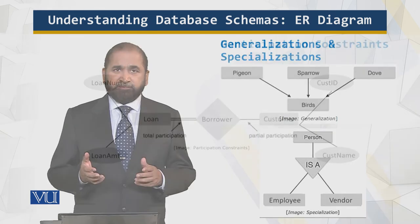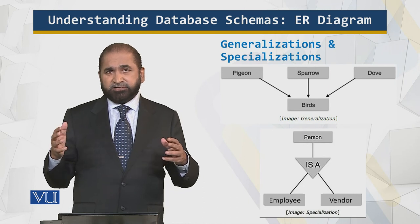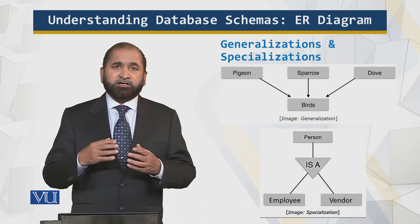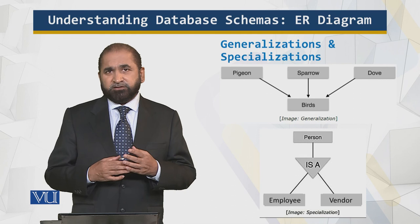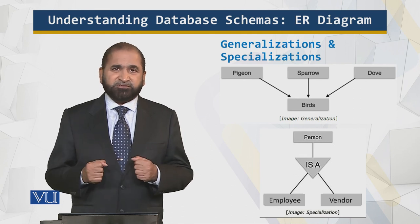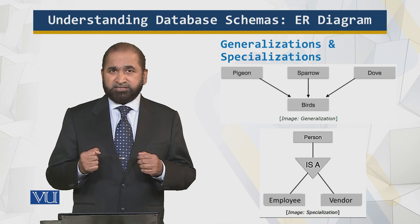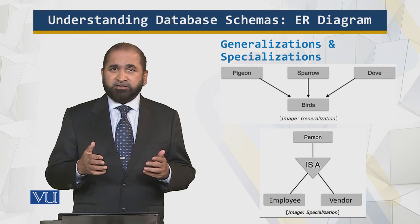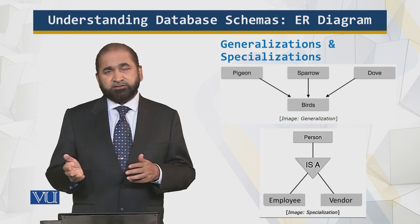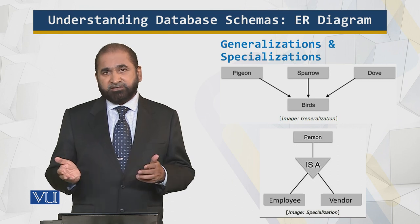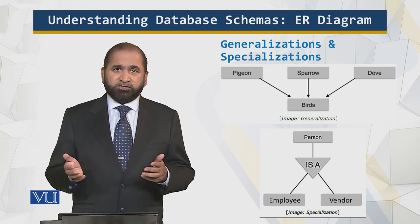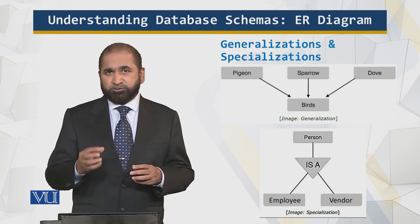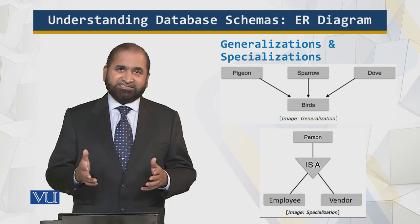Finally, generalization and specialization. Generalization is that we lump together all the things — for example, a parrot, a crow, or a robin: they are birds, as you can see on the screen. And when we go to specialization, a person can be an employee, can be a customer, can be a vendor — they have their attributes also. So the notation which you see on the screen is powerful enough to encapsulate and capture these relationships. That is the strength of the ERD model.